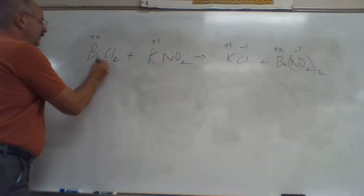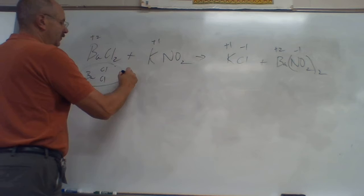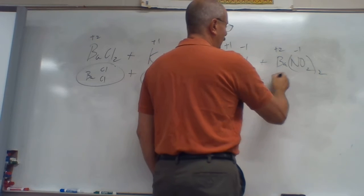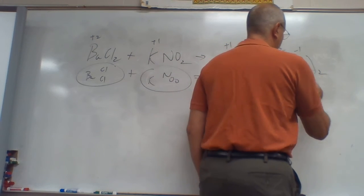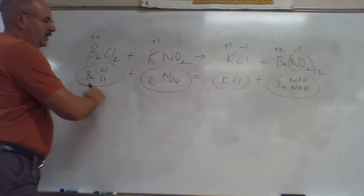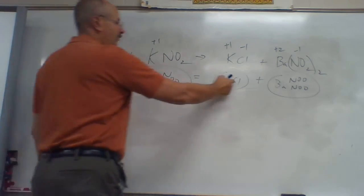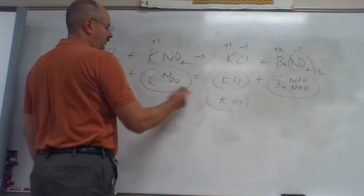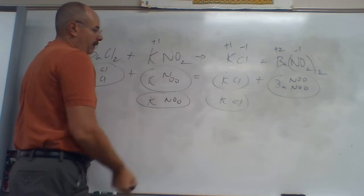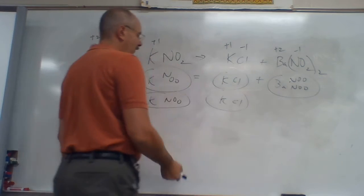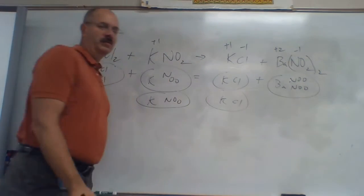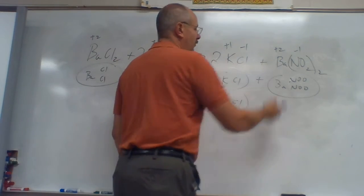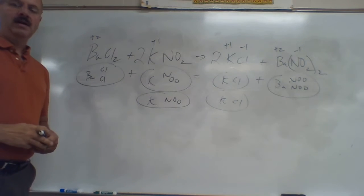Now I'll balance it. I got Ba, two Cls, plus K and N and two O's. That's equal to K and Cl, plus Ba and two O's — two times. One Ba, one Ba. Two Cls, one Cl — there go my Cls. K's: I got one K — one, two Ks, I need another one of this guy. N's: one, two — one, two. O's: one, two, three, four — and one, two, three, four. Final answer: one, blank, one, two — put a two; one, two — put a two; one, leave blank. That finishes double replacement.